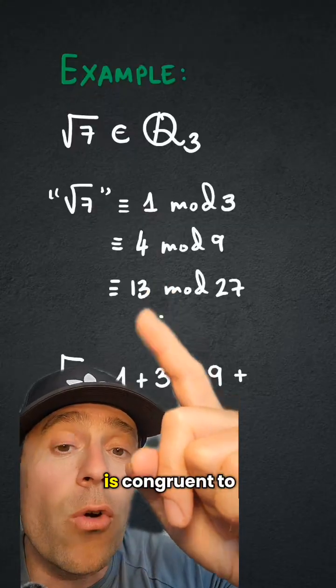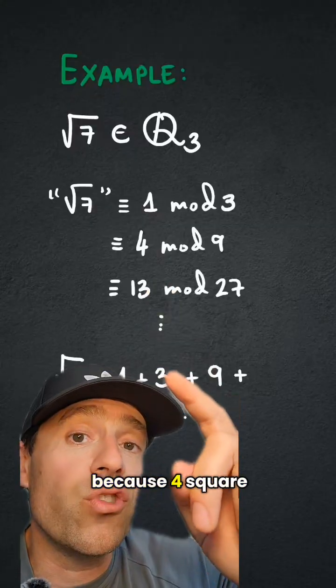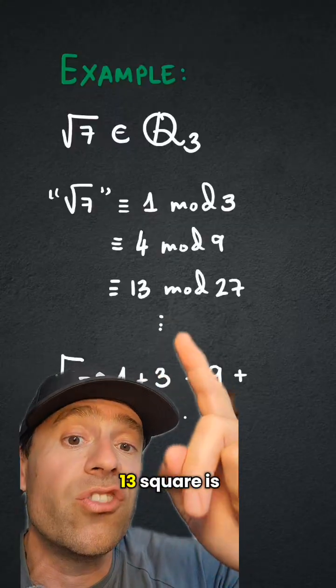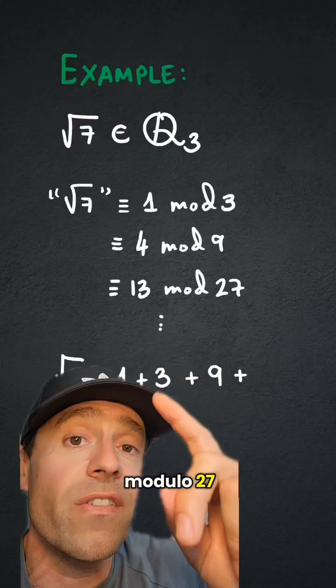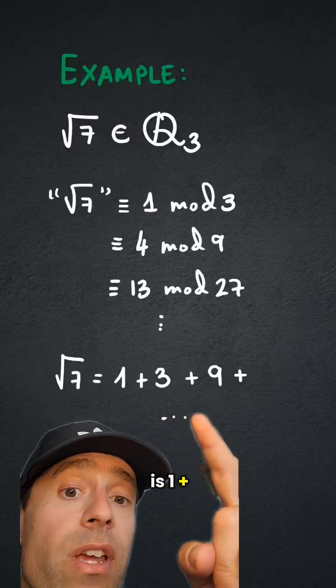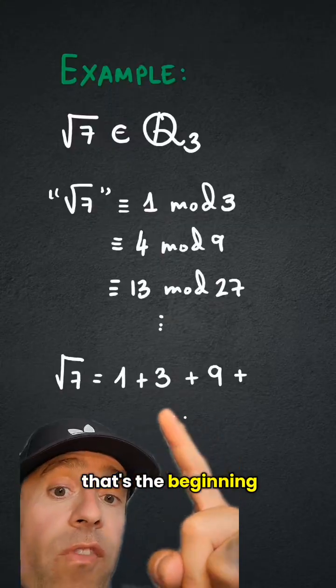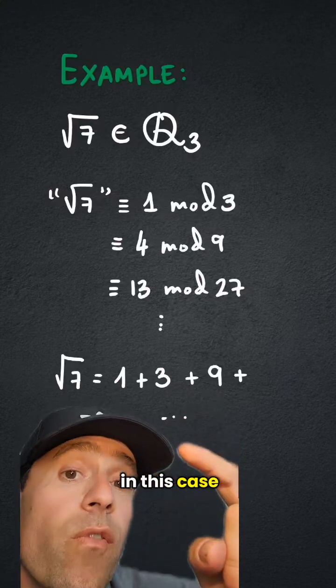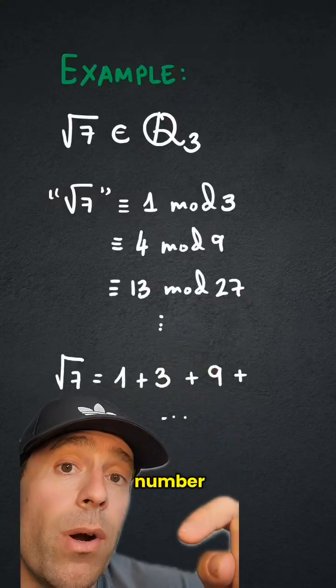It's congruent to 4 modulo 9, because 4 squared is 16, and 16 is congruent to 7 modulo 9, 13 squared is congruent to 7 modulo 27, and so on. So the square root of 7 is 1 plus 3 plus 9, that's the beginning of the p-adic expansion, of the triadic expansion in this case, of the number square root of 7 as a triadic number.